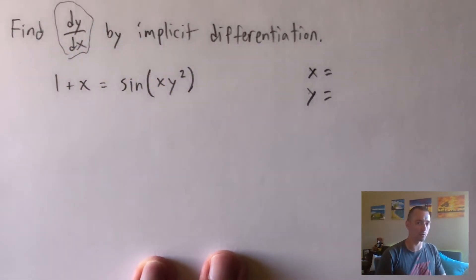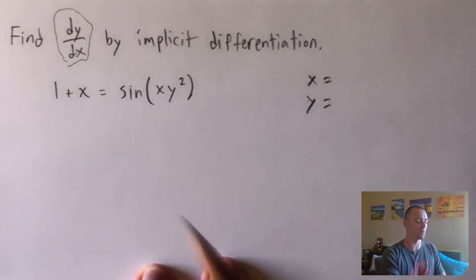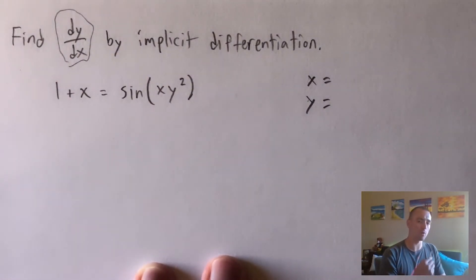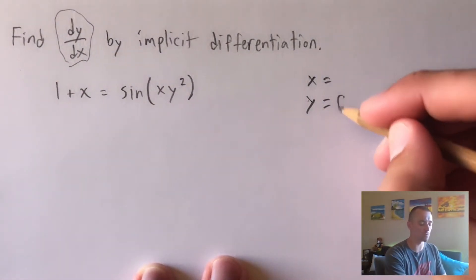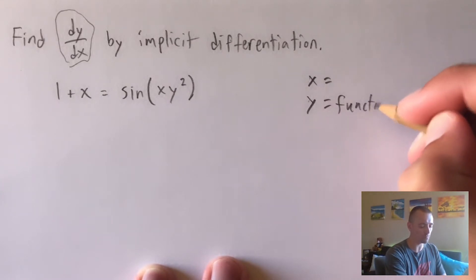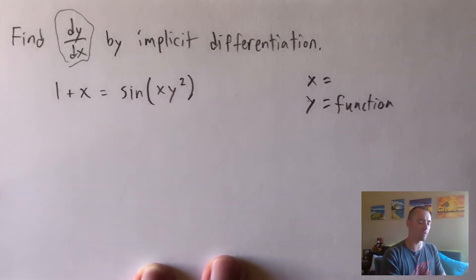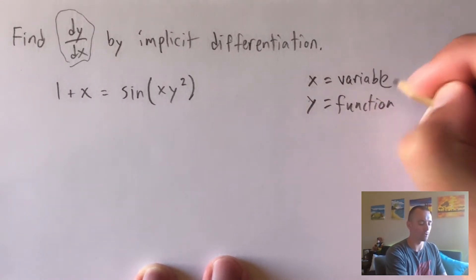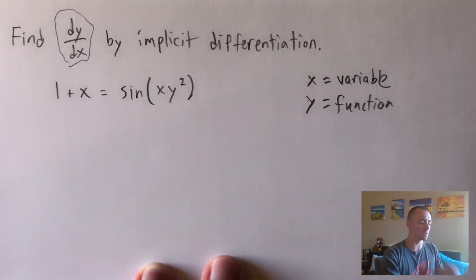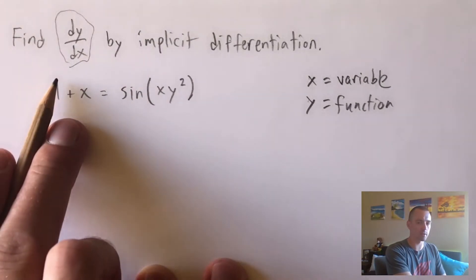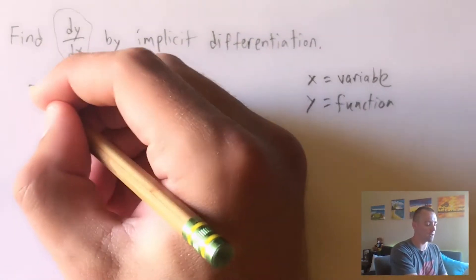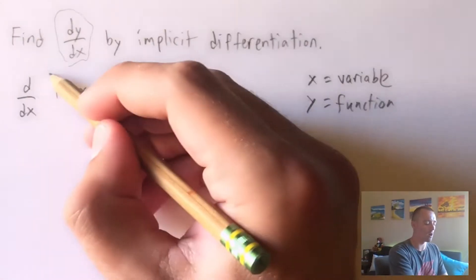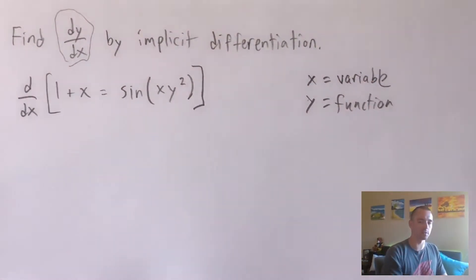dy/dx is the thing we're looking for. That tells us the y on top is going to be the function and the x on the bottom is going to be the variable. So y is a function, and it is a function of x, which is the variable. This is important because we're going to find d/dx of this entire equation — both sides.